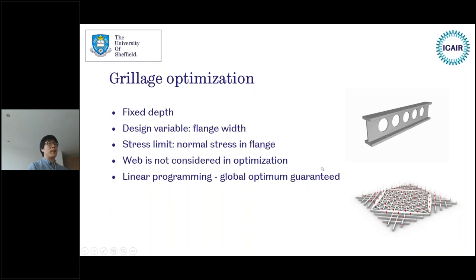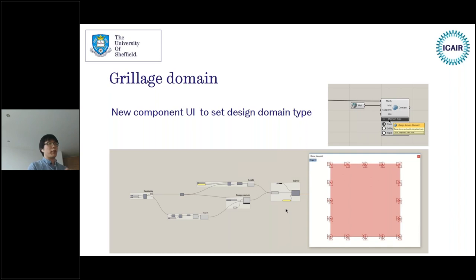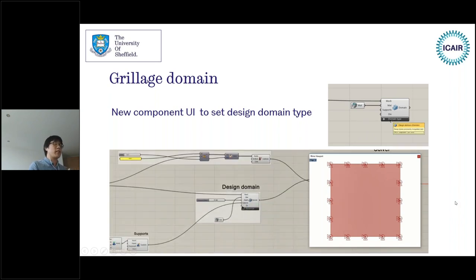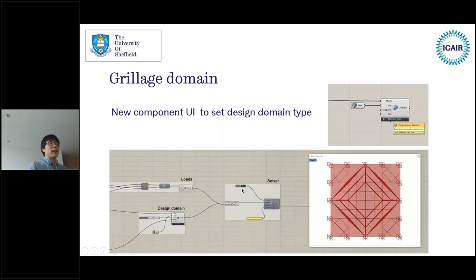The next topic is grillage optimization. As Matthew mentioned, we make some assumptions: we fix the depths of the grillage, and the defined variable is the width of the flange. The stress limit is on the normal stress in the flanges, and the web is not considered in our optimization. With these assumptions we can again formulate a linear programming problem, guaranteeing the global optimal. To solve the grillage optimization problem we only need to specify a grillage domain using the new component UI, which dynamically changes inputs suitable for your problem. The workflow is almost identical to truss optimization. Once the solver is enabled, you get a solution almost instantly.